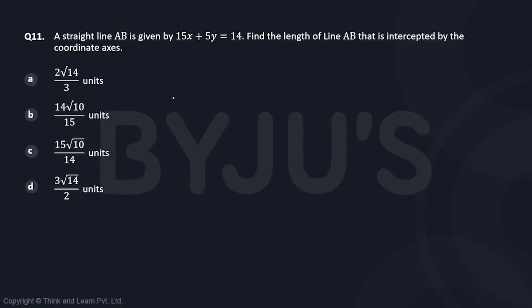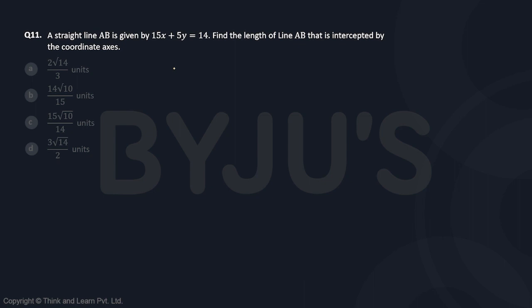Question number 11 is a simple concept of coordinate geometry. A straight line AB is given - the equation of the line is given. Find the length of line AB that is intercepted by the coordinate axes. We'll find the intersection point of this line at the coordinate axes.